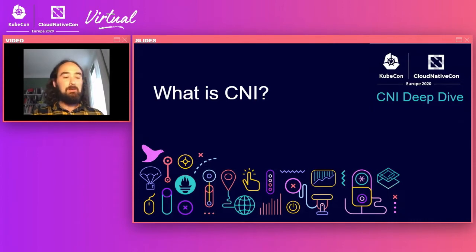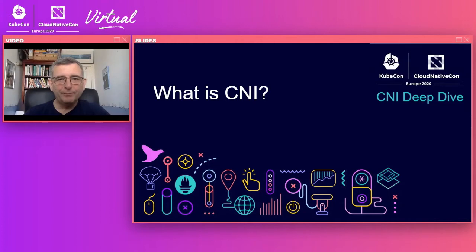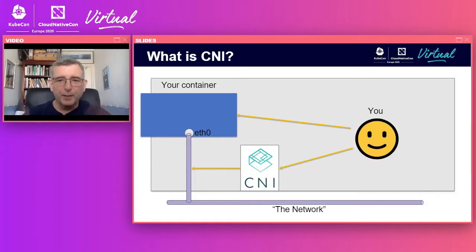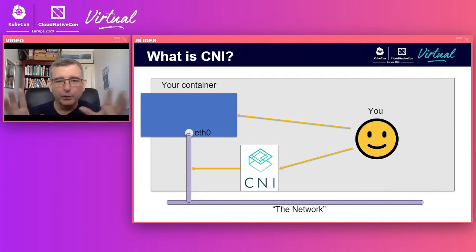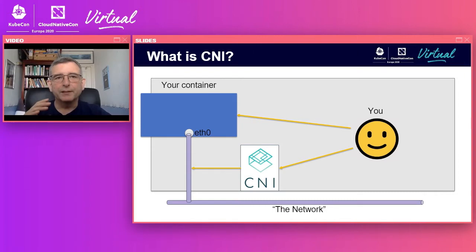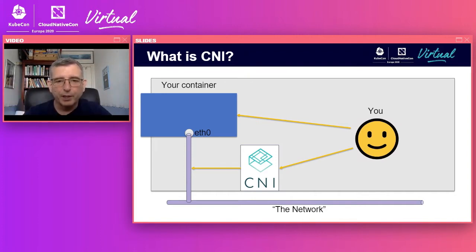So we'll start out with Brian explaining what exactly is CNI. We put the big picture here — you, your container, and the network, and CNI sits in the middle. The point we're trying to make here is that CNI is intended to sit in a world where people use all different kinds of networks and all different kinds of ways of getting their containers working. It's the bit in the middle — a common ground interface so that different companies and people can contribute and have things work together.